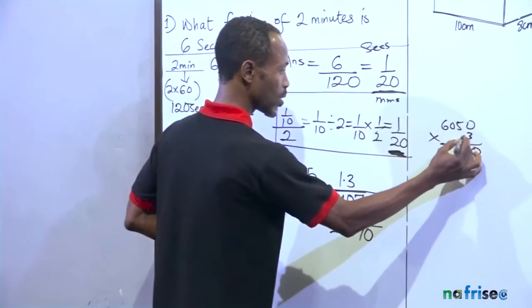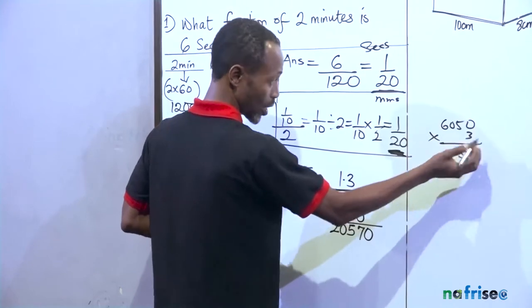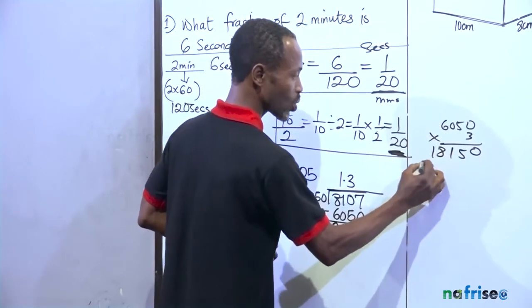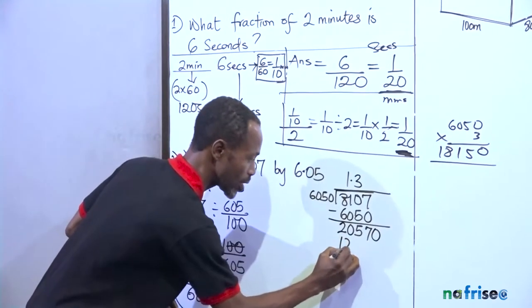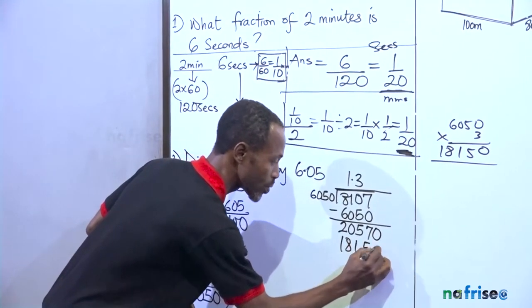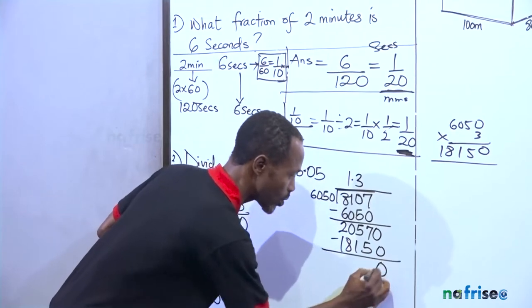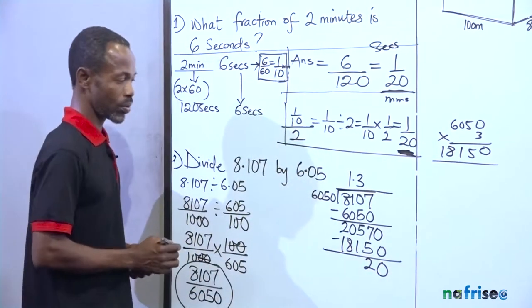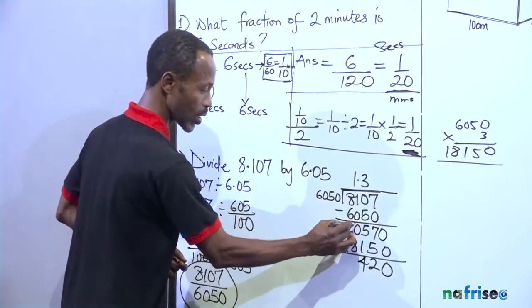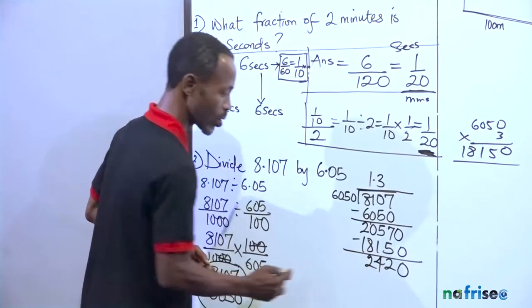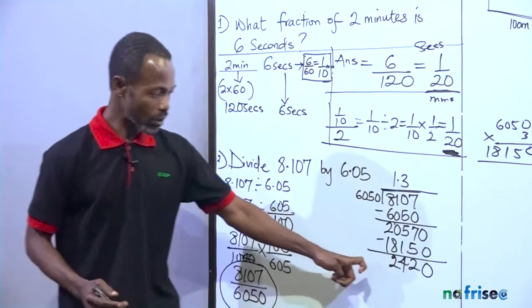3 times 5 is 0. That's 0 plus 1, 1. Here will give us what? 18. So we get 18,150. So write that down here. 18,150. You subtract this. You have 0. This is a 2. This will give me a 4. If I take 1 here, that will give me a 10. 10 minus 8 is 2. One of that will be 2,420.